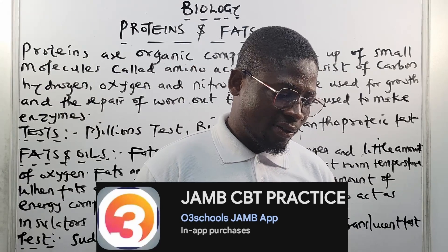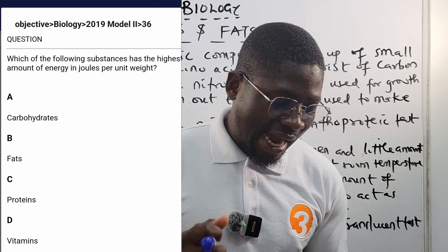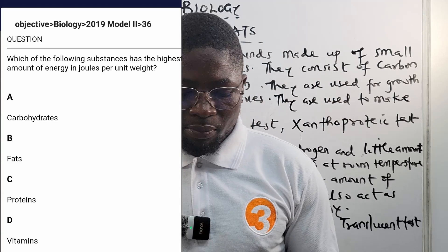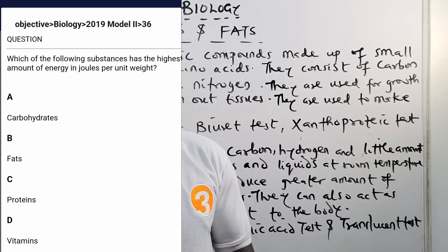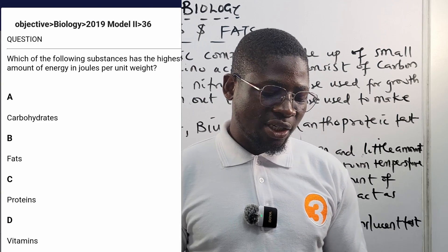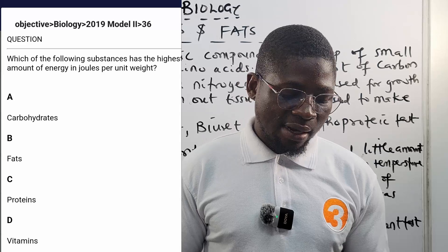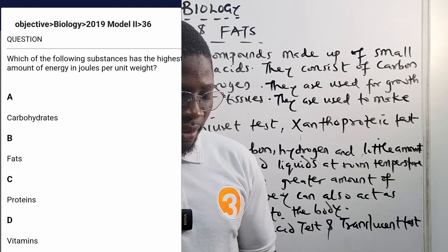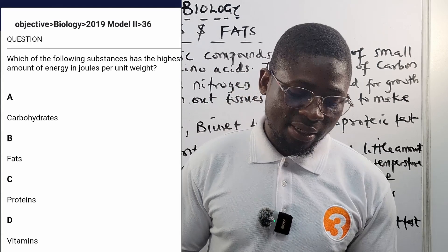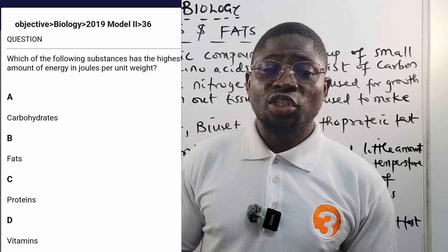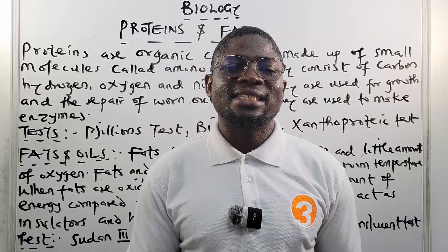This is a JAMB past question, 2019 number 36. It says: which of the following substances has the highest amount of energy in joules per unit weight? A says carbohydrates, B says fats, C says protein, D says vitamins. We'll come back to answer this question at the end of the class.